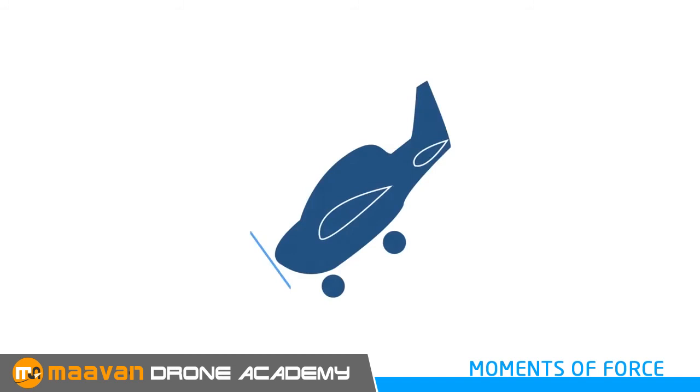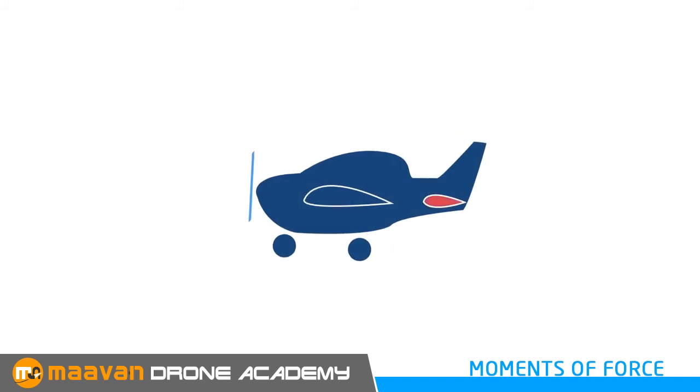So how is this fixed? The stabilator takes care of it by generating an opposing downward force. This downward force does not need to be great since the arm is long which helps to create a moment of force that is strong enough for the aeroplane to remain in equilibrium.